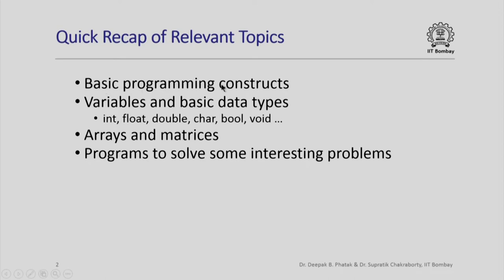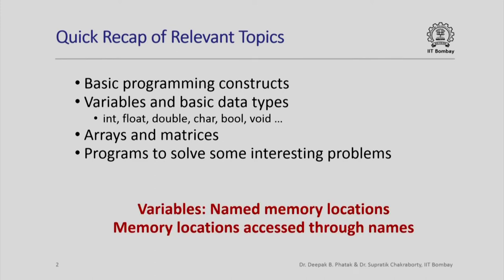We have looked at basic programming constructs, the usage of variables in programs, and some basic data types like int, float, double, char, bool, and void. We have used void only as the return type of some functions, but it is a basic data type in C++ that we have seen. We have also seen the usage of arrays and matrices and looked at programs to solve some interesting problems.